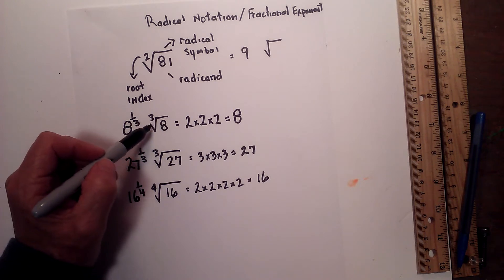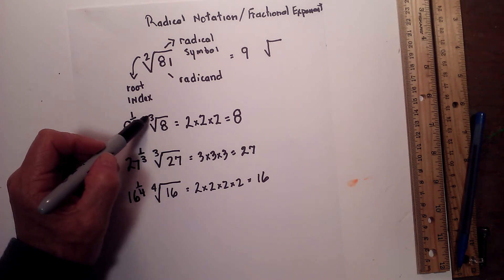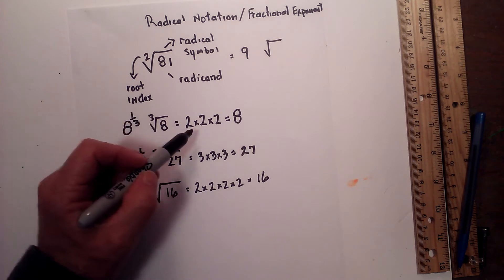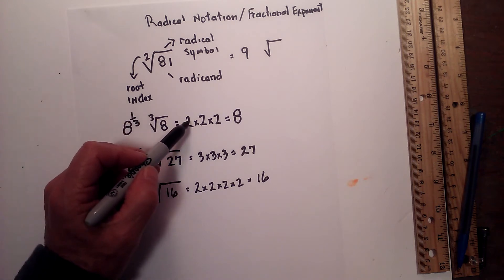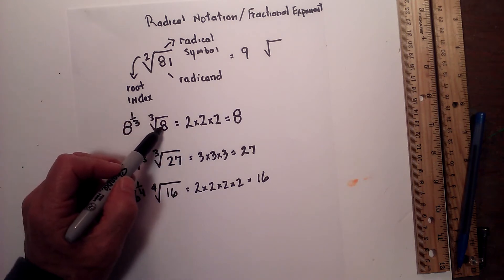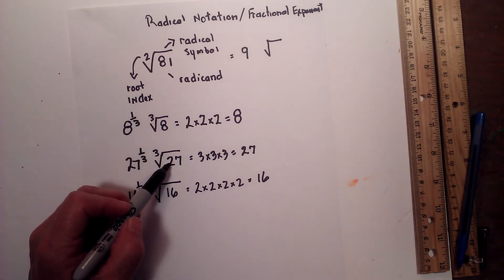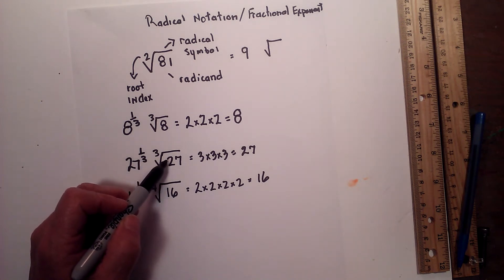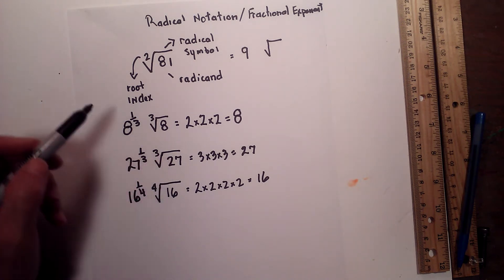Here is the radicand. The radical symbol has a root index of 3. So what number multiplied by itself 3 times equals the radicand — for example 27. What number multiplied by itself 3 times is equal to 27?